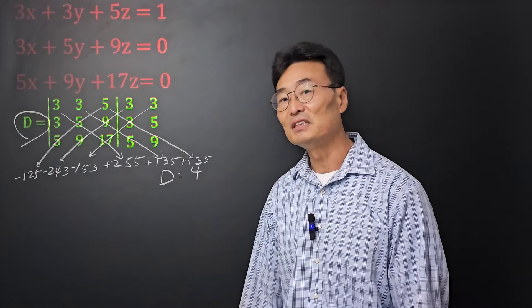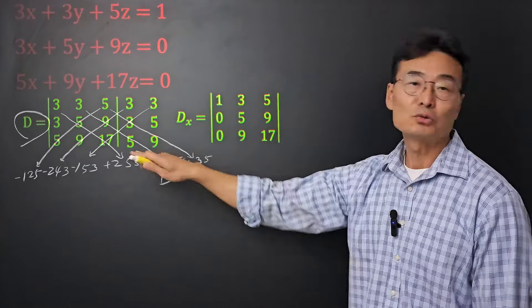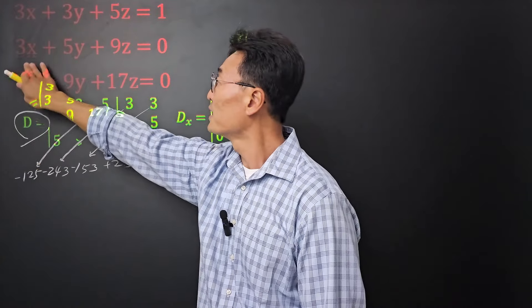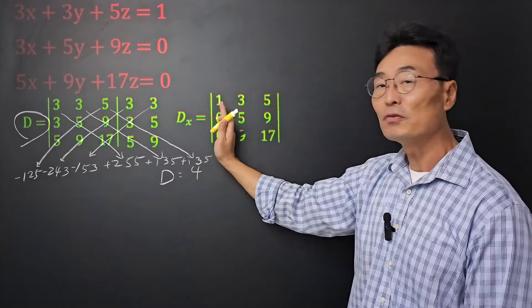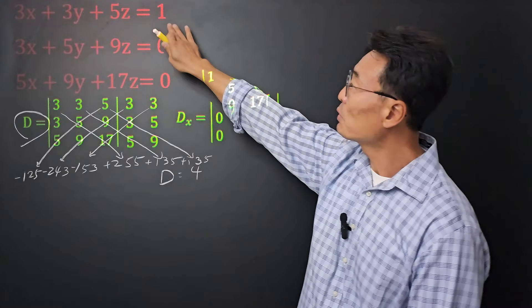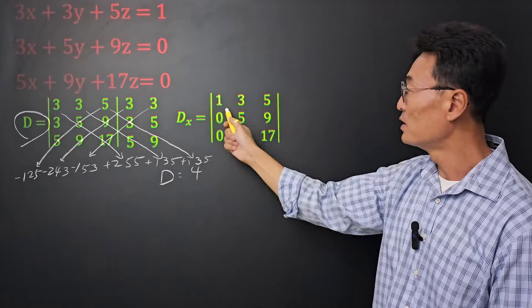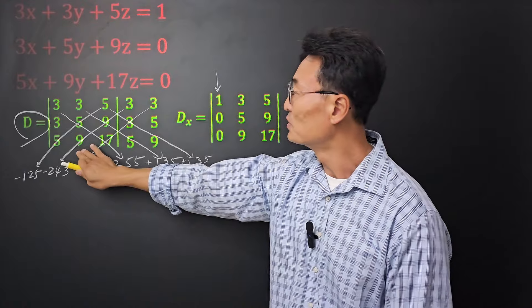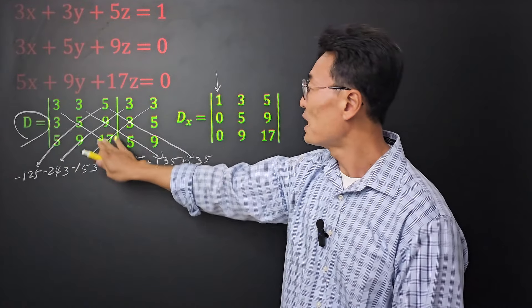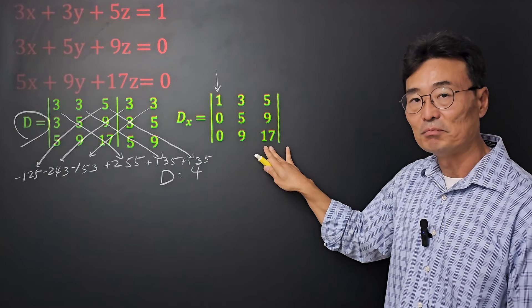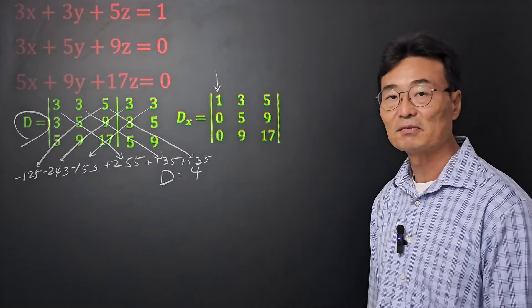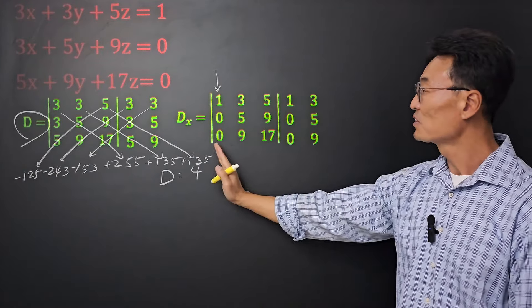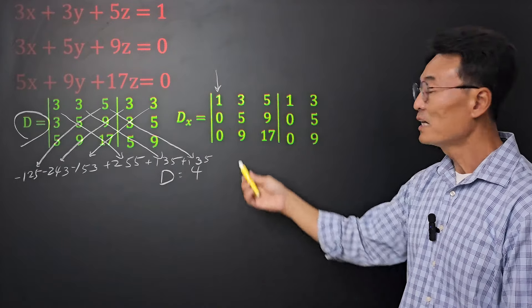Next, we need to find the value of dx. dx is similar to what we did, except we remove the first column — the 3, 3, and 5 from the x coefficients — and replace them with the numbers on the right side of the equals sign: 1, 0, 0. The second column (3, 5, 9) and third column (5, 9, 17) stay the same. We now find the determinant of this matrix using the same shortcut: rewrite the first and second columns on the right side and multiply.